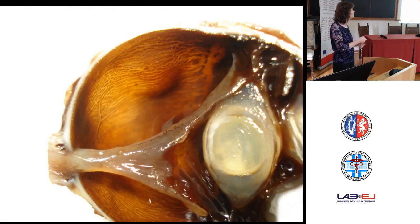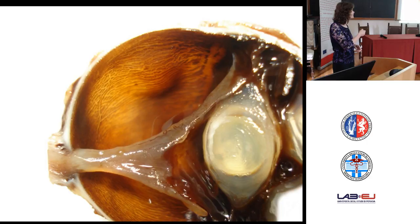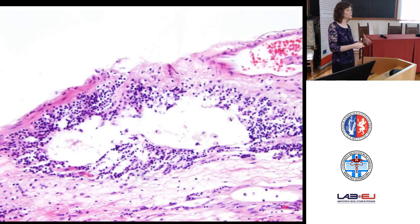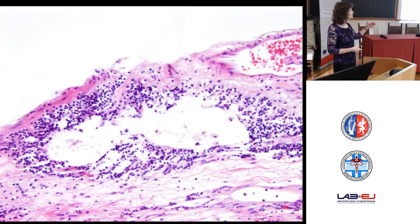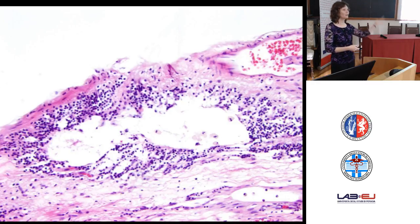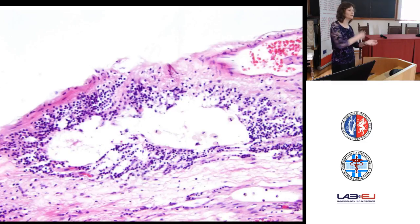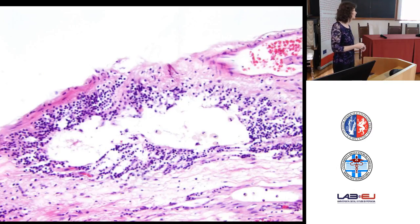Some dogs with retinal dysplasia lived to older age, and we saw complete retinal detachment. Notice the globe is somewhat orange or yellow because of a lot of hemorrhage associated with chronic hemorrhage and hemosiderin buildup. In an older dog, dysplasia is really hard to confirm because you get degenerative changes and folding on top of dysplastic changes. We only knew this dog had retinal dysplasia because an ophthalmologist had evaluated the animal over its lifetime. Otherwise we would not have been able to make that call at seven years of age when this globe was enucleated.